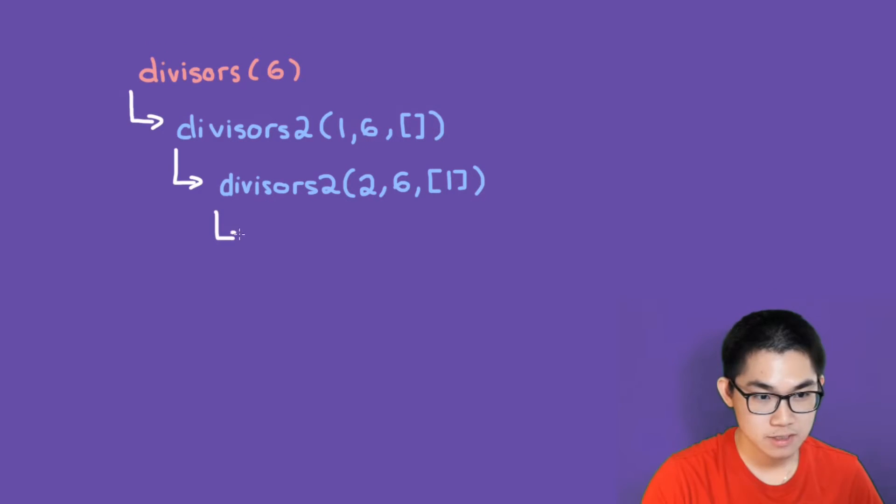And then we recurse again. So we have divisors2. This number becomes 3. This is 6. And now 6 can divide by 2. So we add number 2 in here. So now we have 1 and 2. And then we recurse again.